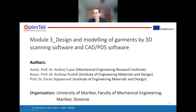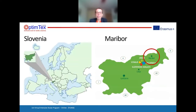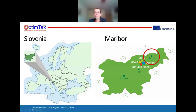We are a perfect interdisciplinary team for this kind of module. For those who have not been to Slovenia, let me show where it is located. We have neighbors in Austria, Italy, Croatia, and Hungary. Maribor lies on the northeast part of Slovenia, which has the shape of a bird.